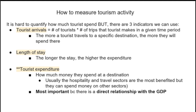The most important indicator — marked with an asterisk — is tourist expenditure: how much money they spend at a destination. Usually the hospitality and travel sectors benefit most, but tourists could spend money in other sectors too, like healthcare. This is the most important measure because there is a direct relationship with GDP.